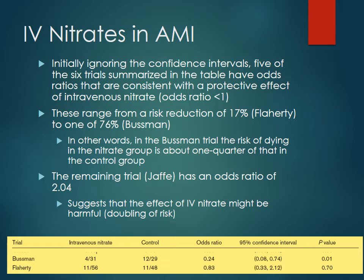Based on the studies, you have a pretty wide range of odds ratios — or risk reductions — anywhere between 17% in the Flaherty study all the way up to 76% in the Busman study. If you look at the Busman study with an odds ratio of 0.24, you're about a quarter as likely to experience death if you receive IV nitrates as if you receive no nitrates. Then there's the sixth trial, the Jaffe one, which had an odds ratio of 2.04 — that actually suggests that receiving nitrates doubled your odds of death. It's one of the big outliers for that group, and the odds ratio being so different will lead us to ask some important questions about how these studies were performed.